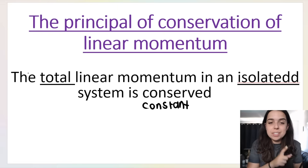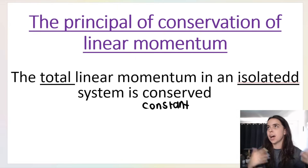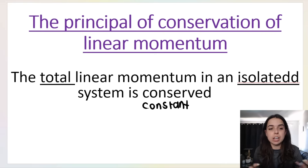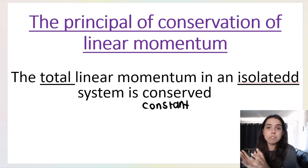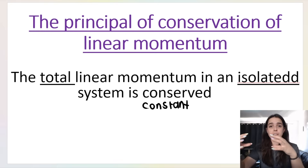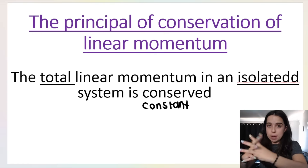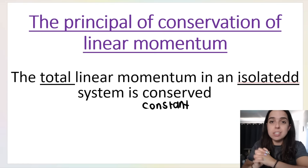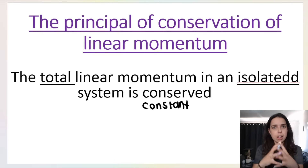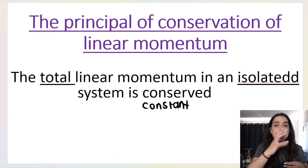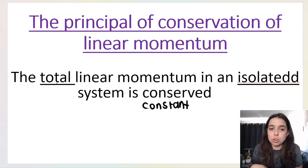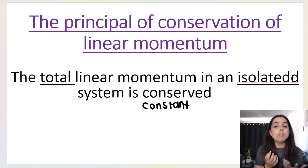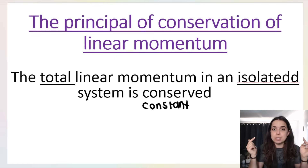You have to say 'total' — it's not just 'the linear momentum in an isolated system is conserved,' it's important to say total. We're considering all the objects in a system. For example, with two cars, in the before situation we add up their momenta — the initial momentum of the system. Then after they crash, we take A and B's momentum again and add them together. The before and after totals should be the same if this principle holds true.